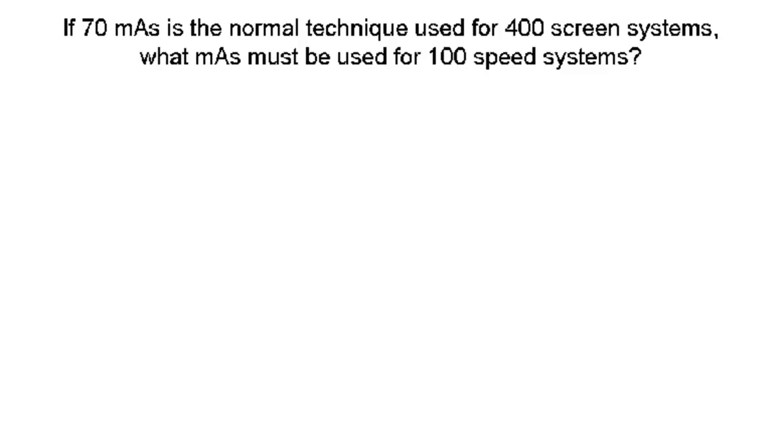So this is a film screen conversion to maintain density. Our first question: if 70 mAs is the normal technique used for a 400 screen system, what mAs must be used for a 100 speed system?